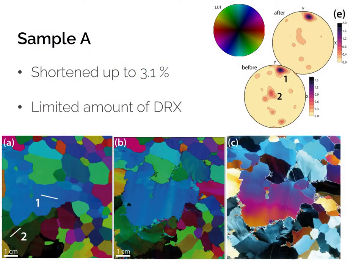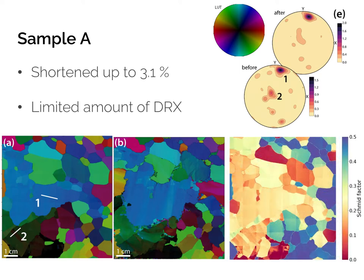Here I will present the evolution of two different samples. Sample A was deformed up to a shortening of 3.1% in a one-day experiment, and dynamic recrystallization was rather limited, mainly confined along one grain boundary. The particularity of this sample is that it presents two grains with a much larger size than the rest: grain number 1 right in the middle and grain number 2 right underneath. These grains show moderate to low Schmid factor values — in orange and red tones — to activate basal glide, meaning these grains are not well-oriented to allow easy basal glide deformation.